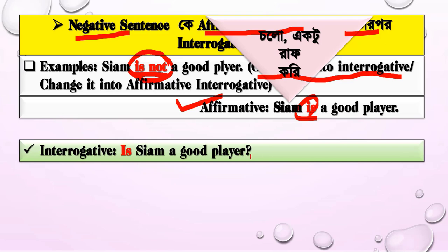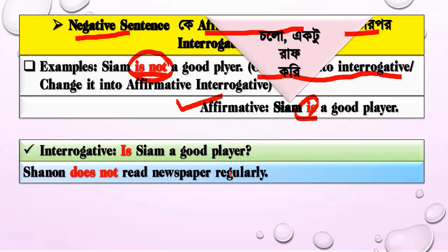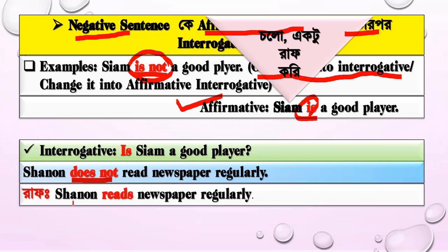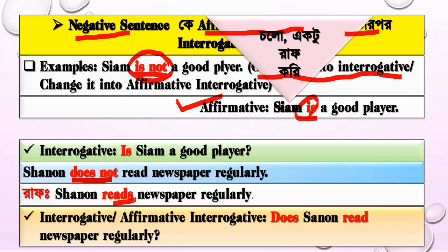For example: 'Is he a good player?' — that is the interrogative form. Another example: 'Does Shannon read a newspaper regularly?' — that is the interrogative transformation.